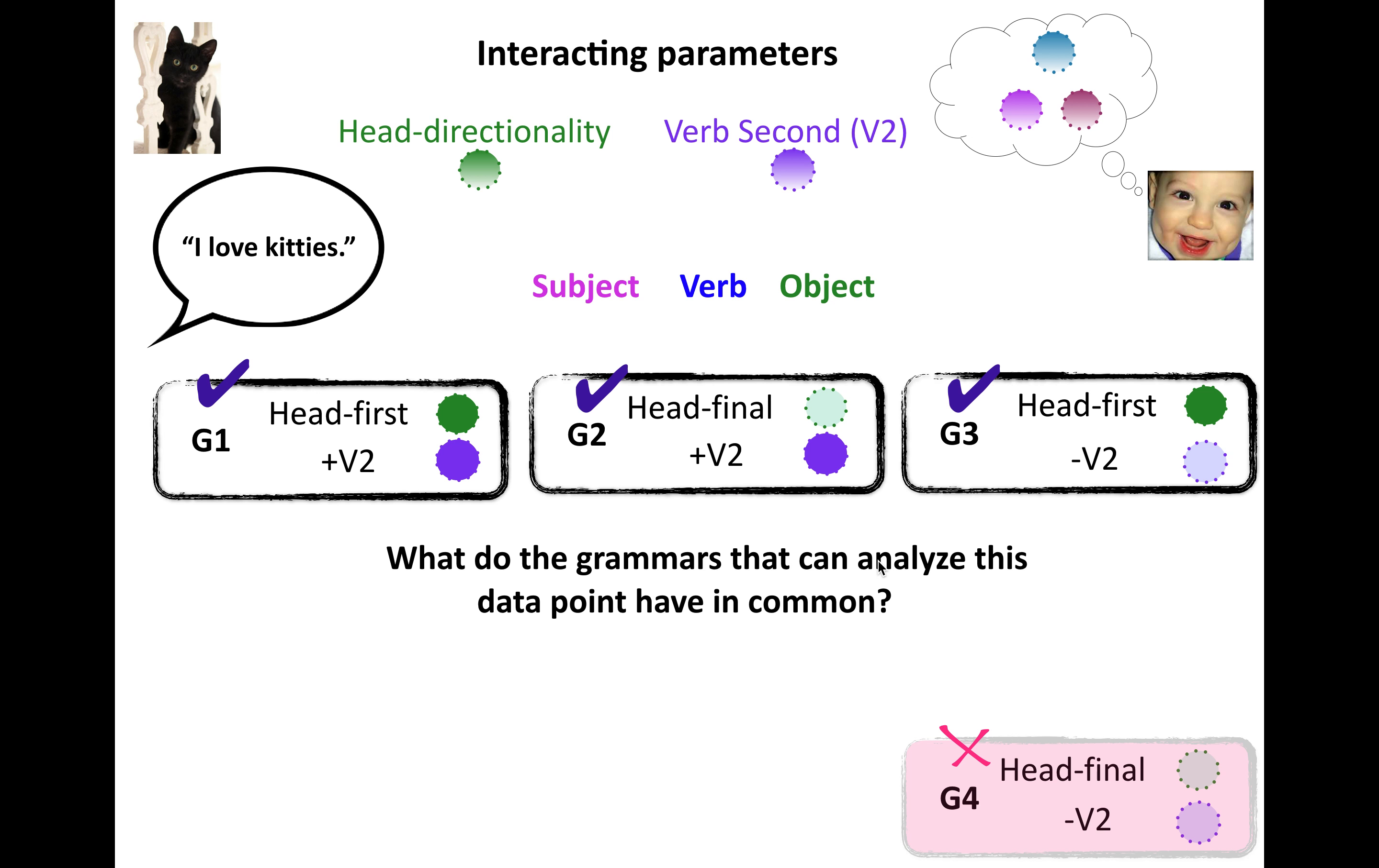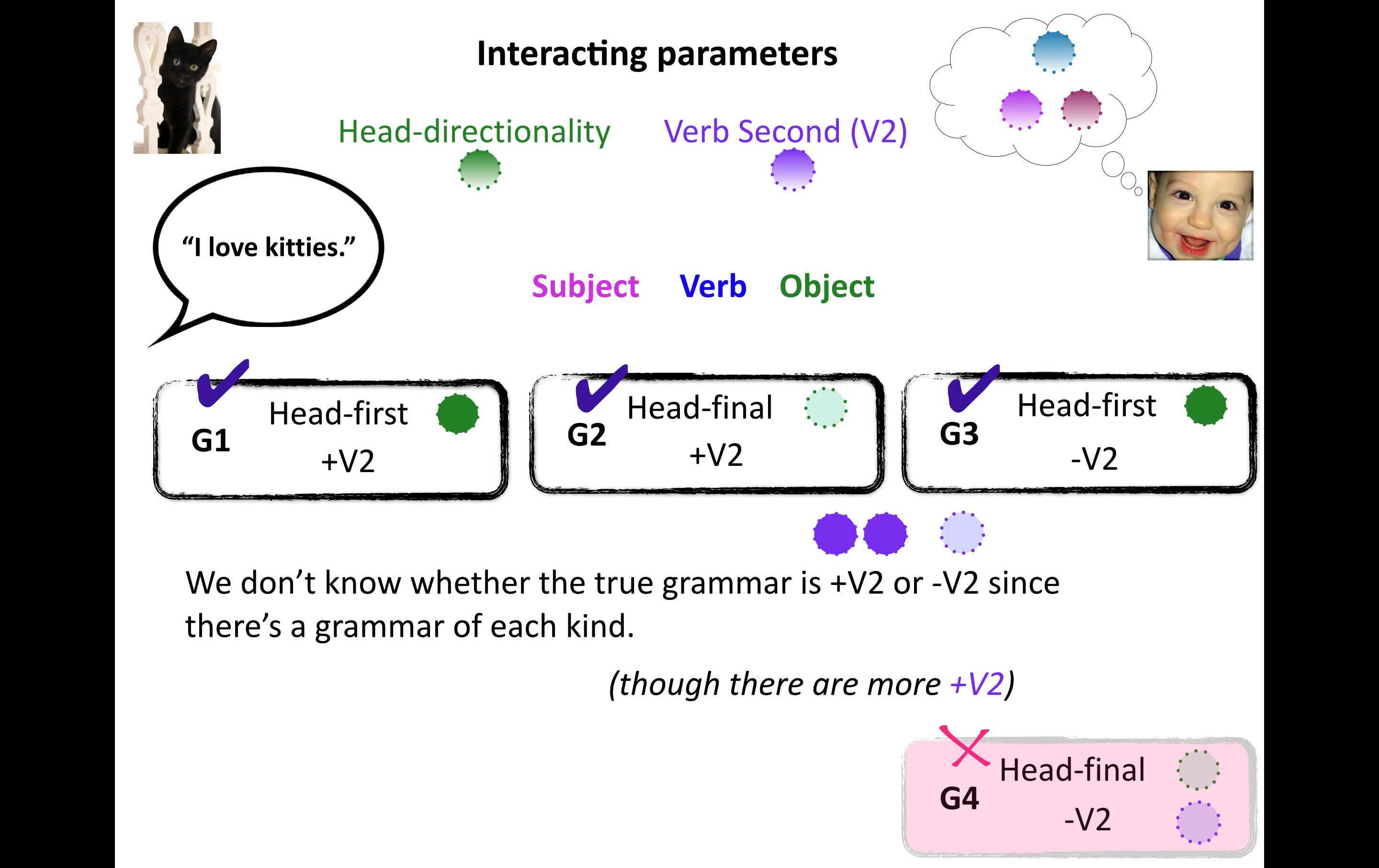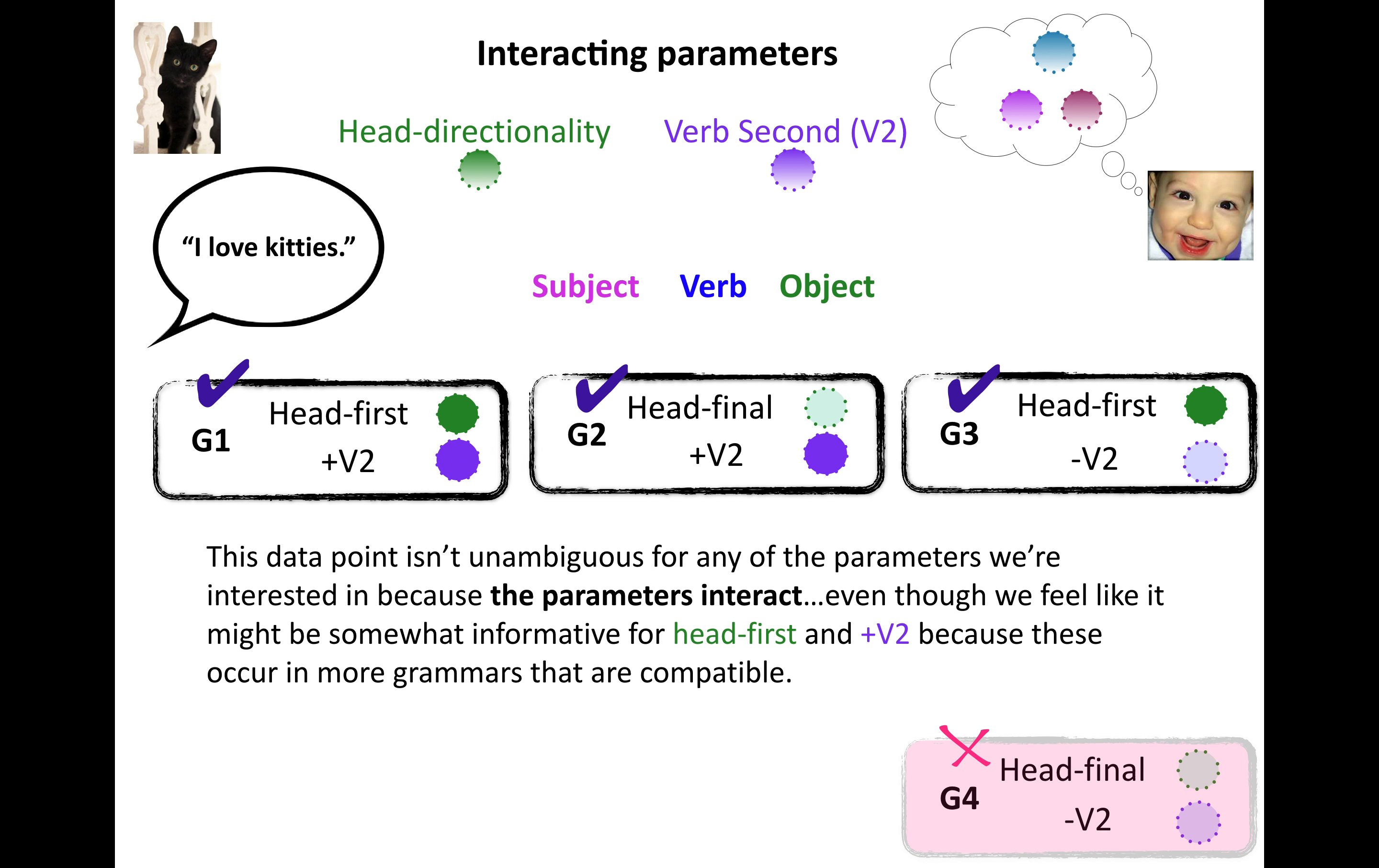So what do the grammars that can analyze this data point have in common? And the answer is a bit, right? So we don't know whether the true grammar, the true grammar for this language, is head first or head final since there's a grammar of each kind among the ones that can actually account for this data point, although there are in fact more head first grammars. We don't know whether the true grammar is plus verb second or minus verb second since once again there's a grammar of each kind, though once again there are actually more verb second ones, right? But the point is this is ambiguous. The data point isn't unambiguous for any of the parameters we're interested in in this little teeny world because these parameters interact, although we might feel like this data point should be somewhat informative for maybe the ones that showed up more often in the grammars, right, that were compatible. Head first, right, we have two of those and plus verb second, we have two of those, but no, technically it's ambiguous.